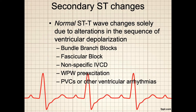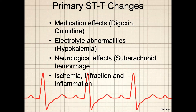In this case, the ST change is because of alterations in the sequence of ventricular depolarization in such rhythms as bundle branch blocks, fascicular blocks, nonspecific idioventricular cardiac disease, Wolff-Parkinson-White pre-excitation, and premature ventricular complexes or other ventricular arrhythmias. Primary ST changes may also be caused by medication effects such as digoxin or quinidine, electrolyte abnormalities as in hypokalemia, neurologic effects such as in a subarachnoid hemorrhage, or ischemia, infarction, and inflammation from a STEMI — an ST-elevated myocardial infarction.